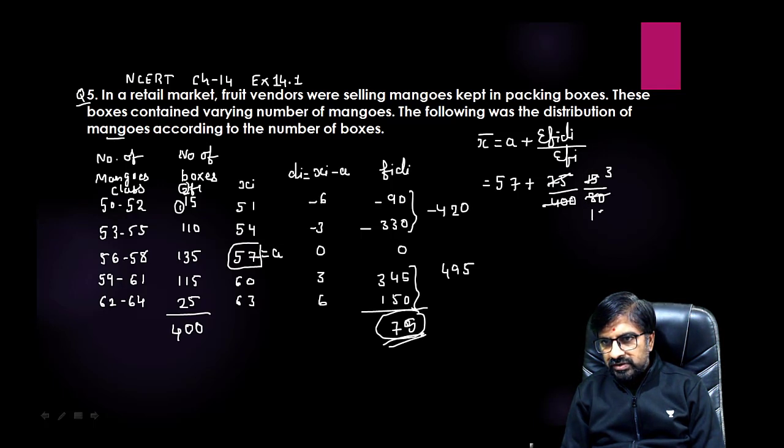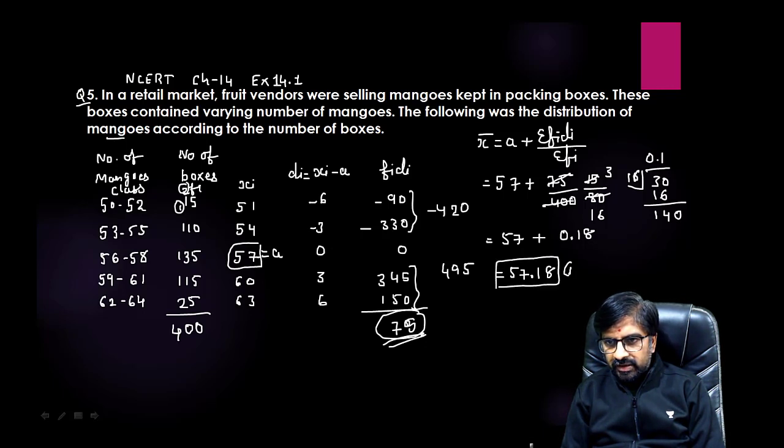Now you can cancel this by 5. 75 divided by 5 is 15, 400 divided by 5 is 80. Again cancel by 5: 15 by 5 is 3, 80 by 5 is 16. So 57 plus 3/16. In decimal, 16 goes into 30 once with remainder 14, so approximately 0.18 or 0.19. So approximately 57.18 or taking it nearby 57.8 approximately. So your answer is approximately 57.8.